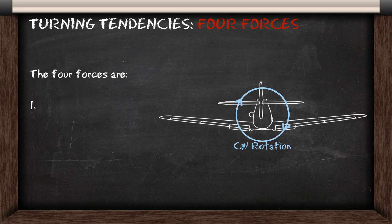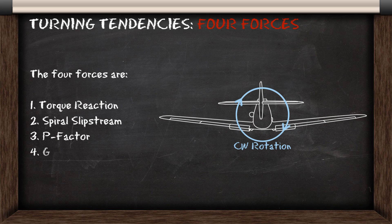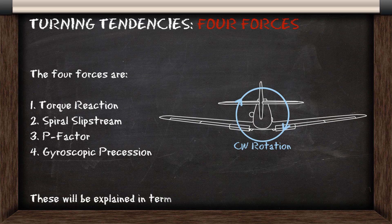The four forces for turning tendencies are torque reaction, spiral slipstream, p-factor, and gyroscopic precession. These are going to be explained in terms of left turning tendencies using a clockwise propeller rotation.